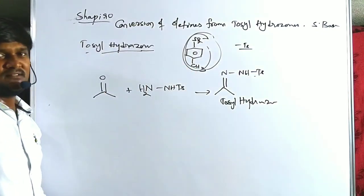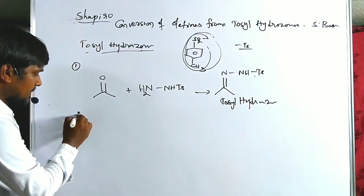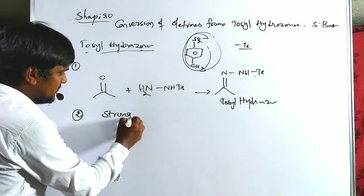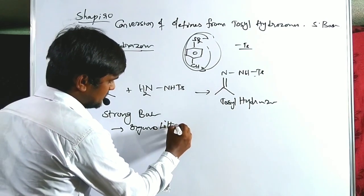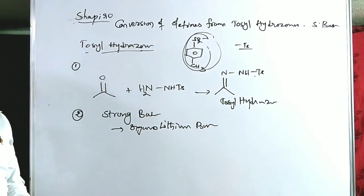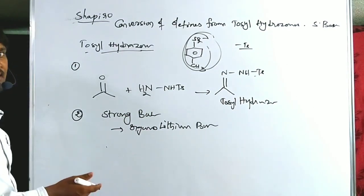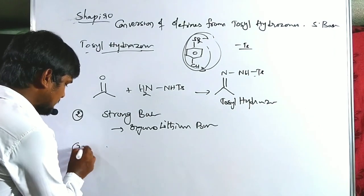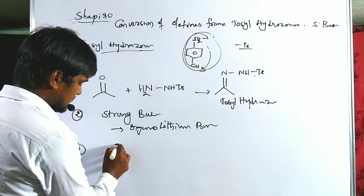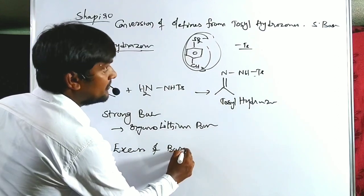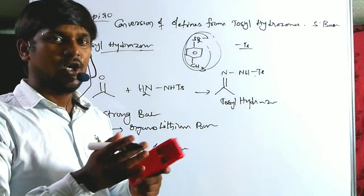The first requirement for the Shapiro reaction is tosyl hydrazone. The second requirement is a strong base — organo-lithium bases are the best examples, and large bases are also used. The third requirement is excess of base — more and more base is used. These are the basic requirements to fulfill the Shapiro reaction, converting tosyl hydrazone to olefin.